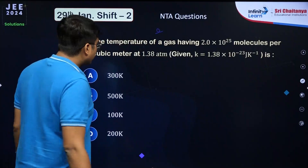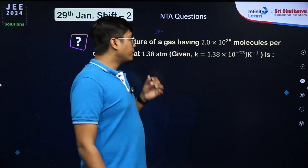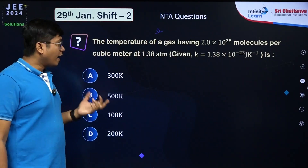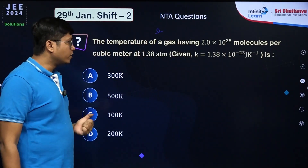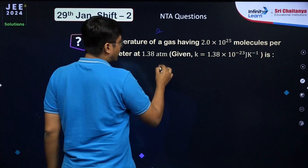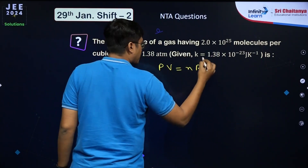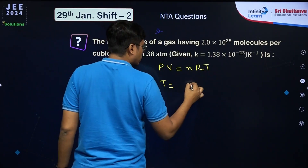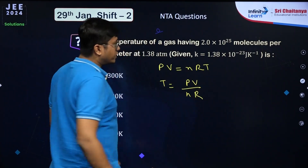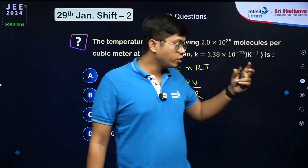The next question asks for the temperature of a gas with 2×10²⁵ molecules per cubic meter at 1.38 atm. We use the ideal gas equation pV = nRT and write T = pV/nR, but since we're given molecules per unit volume, we need to adjust.